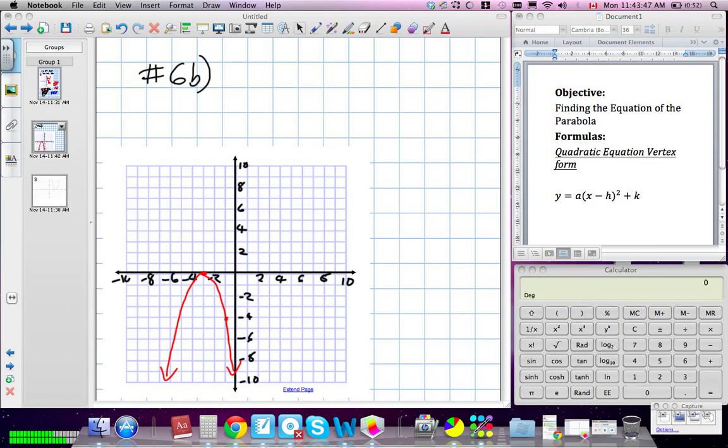Okay, 6b. Very similar question. We have our vertex form. So we're going to put it down. y is equal to a times x minus h squared plus k. Again, we need our vertex, which is at negative 3 and 0. And the other point they've given us is negative 1 and negative 4.